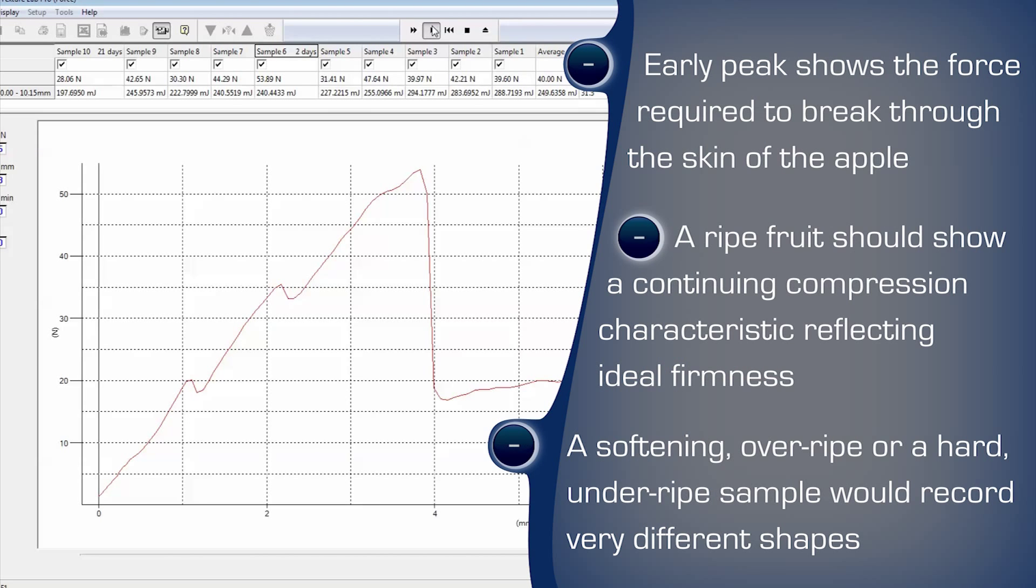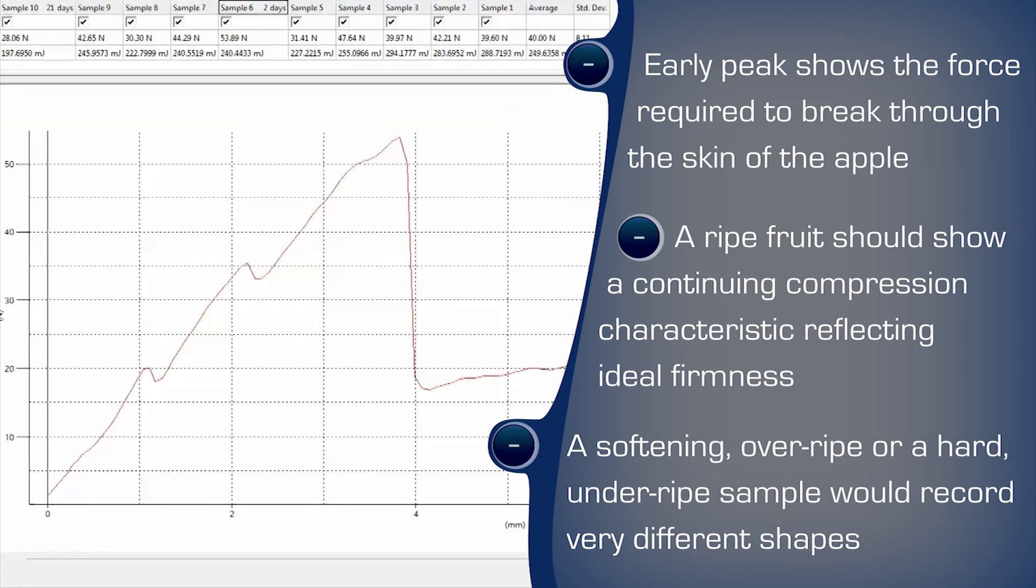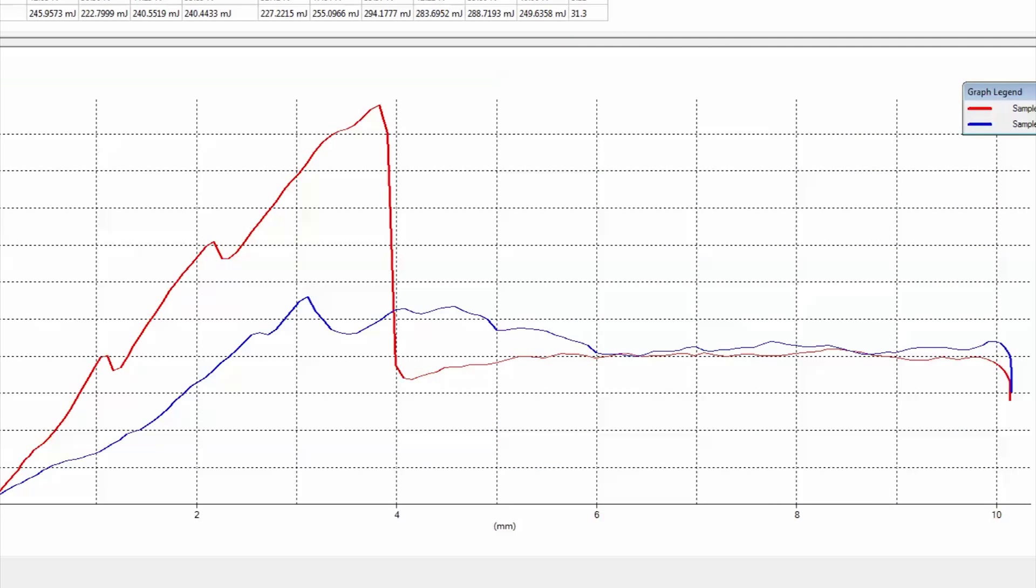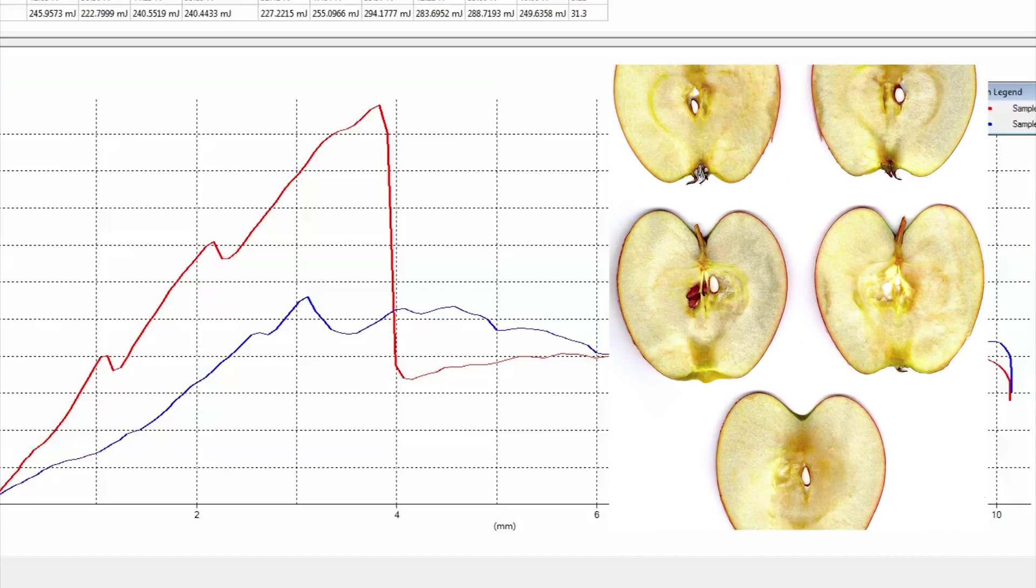The early peak shows the force required to break through the skin of the apple. Beyond this bio-yield, a ripe fruit should show a continuing compression characteristic reflecting ideal firmness. A softening, over-ripe or hard, under-ripe example would record very different shapes.